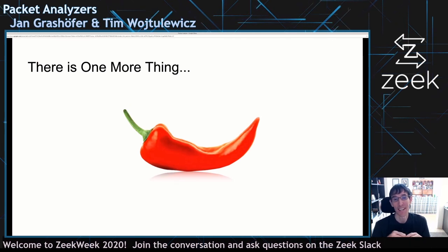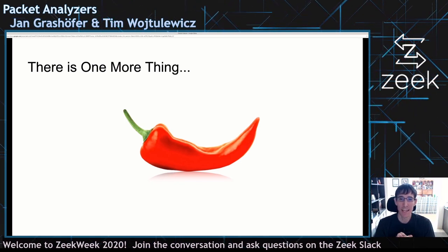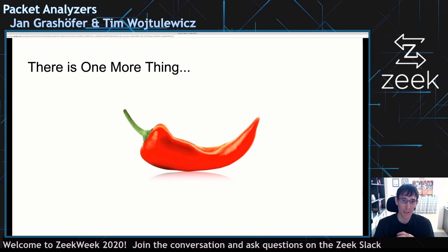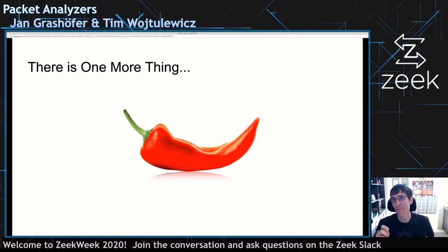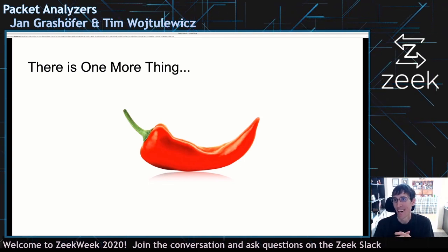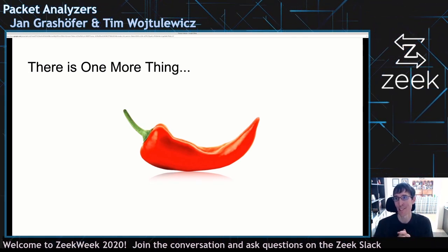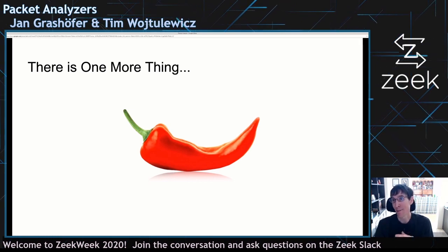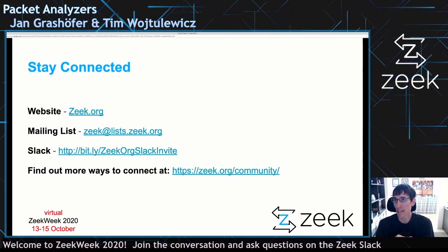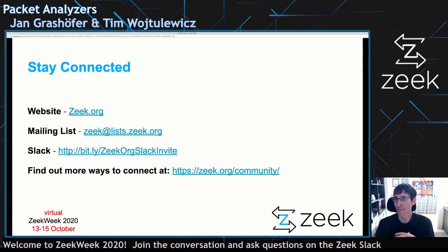One more thing: Robin has been working on writing Spicy analyzers that leverage this work, so you can write Spicy plugins that are actually packet analyzers. It's not quite there yet. Jan mentioned earlier that the API for packet analysis isn't quite stable yet — that's because of Spicy. Robin has gone in and found some things he doesn't like about how this works in relation to Spicy, so there might be some things changing, but that's coming very, very soon. I think that's it for us — we're going to move over into the Slack channel to talk about this. Yan and I will be over there. The next talk is about Spicy, so we'll head over and talk to you all in a minute.